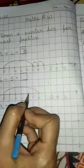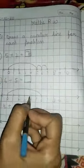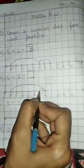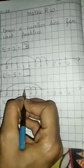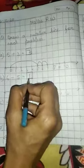Ab minus hai. Toh hum piche jaayenge. Aage hum plus me jaate hai. Piche minus me. One, two, three, four, five. Kis pe ruk gai? One. So answer is one. Answer bhi zbaroon likhenge. Okay.